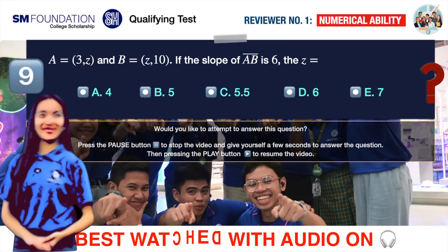Question number 9. Point A's coordinates are X equals 3 and Y equals Z, and point B's coordinates are X equals Z and Y equals 10. If the slope of line AB is 6, Z must be A 4, B 5, C 5.5, D 6, E 7.